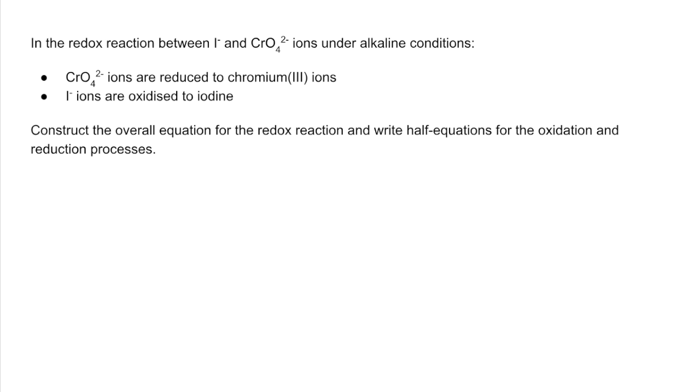So here's the third one. I think the exam board have been a little bit sneaky with this one because they're saying write the overall equation for the redox reaction and write the half equations. That's kind of indicating the order you want them doing in. It's so much easier if you write the half equations first and then combine them. You'll notice for this one it says under alkaline conditions, so whenever you have to use OH⁻ ions in half equations I always do the oxidation number method.